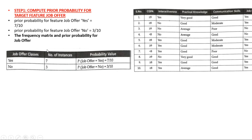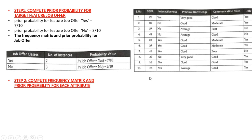Step 2 is to find the frequency matrix and likelihood probability for job offer. We write a table for job offer with classes yes and no. There are 7 yes and 3 no instances. Probability of job offer yes is 7/10 and probability of job offer no is 3/10. Next, find the frequency matrix and prior probability for every attribute in the table: CGPA, interactiveness, practical knowledge, and communication skills — compute the frequency matrix and prior probability for each individually.